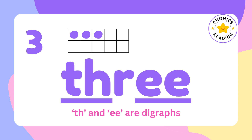3 can be sounded out. There are 2 digraphs in THREE. Th, R, E — Th and E are digraphs. So 3 you can learn as Th-R-E: 3.